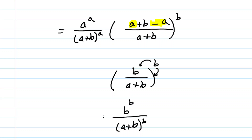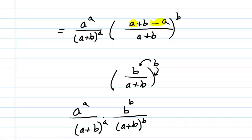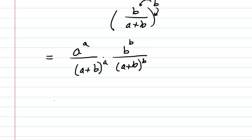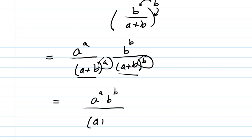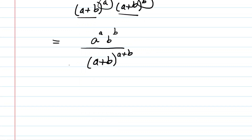Placing both terms together and multiplying, the numerators give a to the a times b to the b. The denominators share the base (a plus b) — when multiplying exponentials with a common base you add the powers — giving (a plus b) to the power of a plus b. So the value of our function at the critical number is a^a times b^b divided by (a plus b)^(a+b).